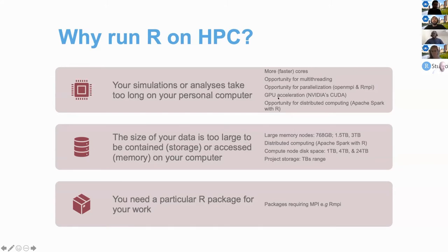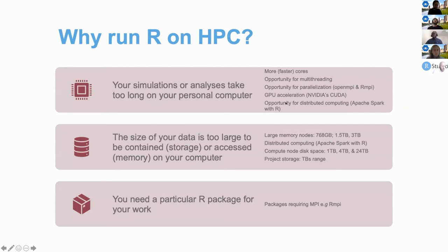Another way to speed up your analysis is GPU acceleration. We have a couple of R packages that can do that — this is especially important if you're doing things like matrix multiplication. You can speed them up using NVIDIA's CUDA parallel programming framework that we have at OSC. A couple of R packages take advantage of this, like the gpuR package for GPU acceleration. You can also take advantage of distributed computing, distributing your data across multiple cores and nodes using frameworks like Apache Spark, and using the R package SparklyR for Apache Spark big data analytics in R.